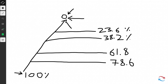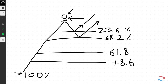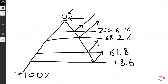When prices retrace to the 23.6 level, traders look to see if prices will continue higher. If prices fail there, traders will look at the 38.2 percent level, and so on. Fibonacci ratios are used as support in an uptrend — traders look to buy at certain retracement levels. In a downtrend, these levels are used as resistance, and traders look for retracements as opportunities to get short.